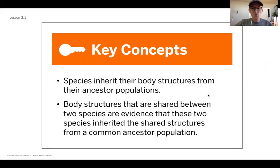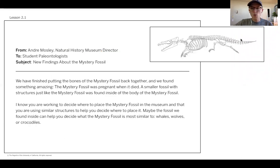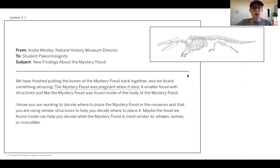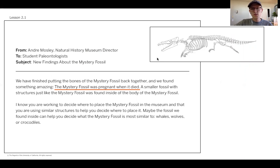Now we're going to get into what we learned at the end of our last unit that didn't necessarily have to do with body structures, but actually had to do with the way one of the species reproduces. In our mystery fossil, this picture shows the full fossil, not just the torso. There was some new information from a couple lessons ago that the mystery fossil was pregnant when it died.